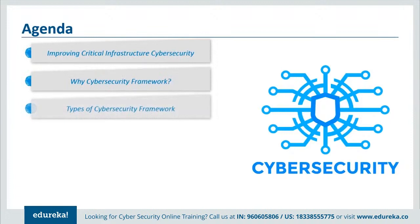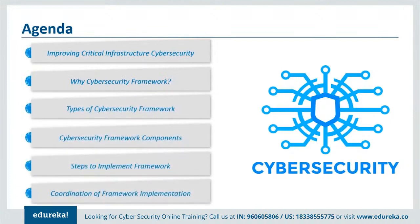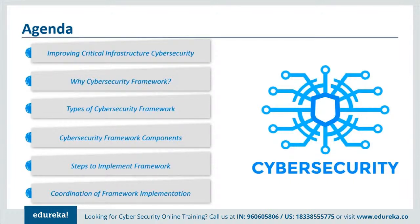To begin with, we'll see how the US government recognized the need for reliable function to secure the national and economic infrastructure to improve critical infrastructure security. Next, we'll discuss the importance of cybersecurity frameworks and why it is required in an organization. Then I'll tell you about different types of frameworks, the components of cybersecurity frameworks, what steps are required to implement frameworks, and finally, a common flow of information and decisions at different levels within an organization.